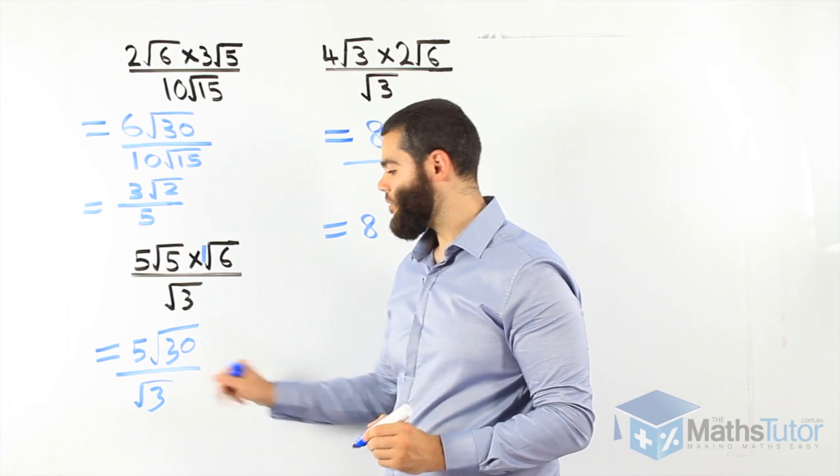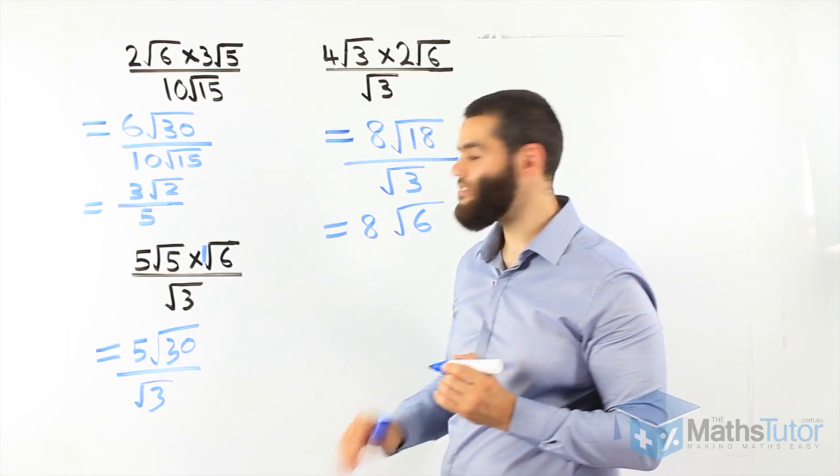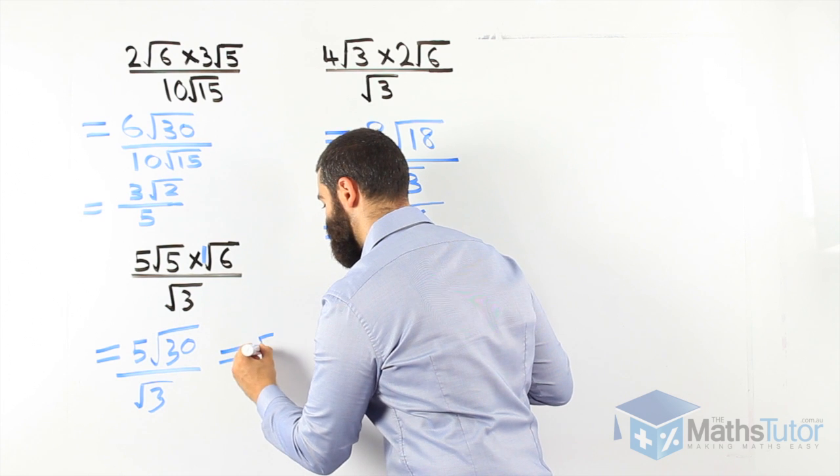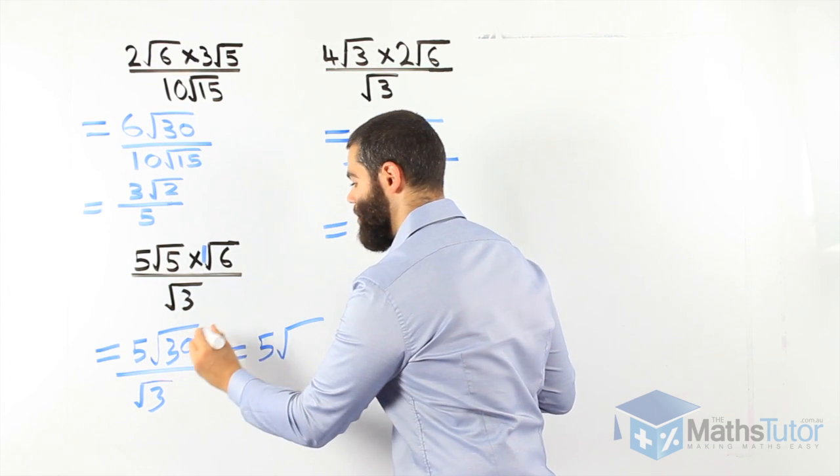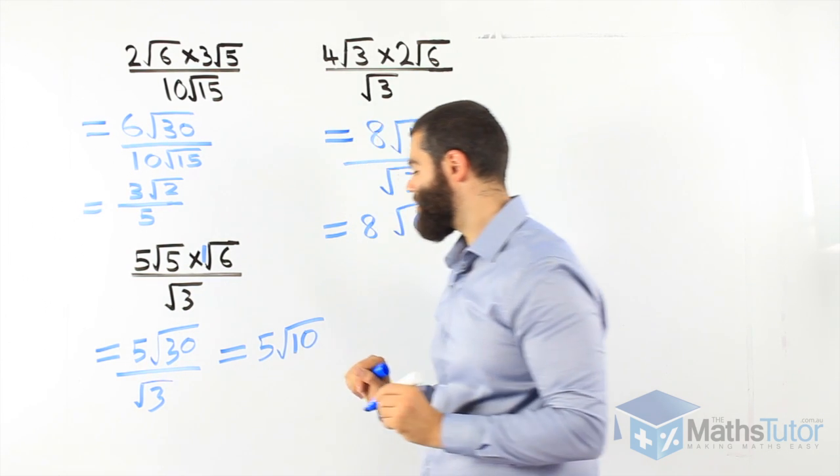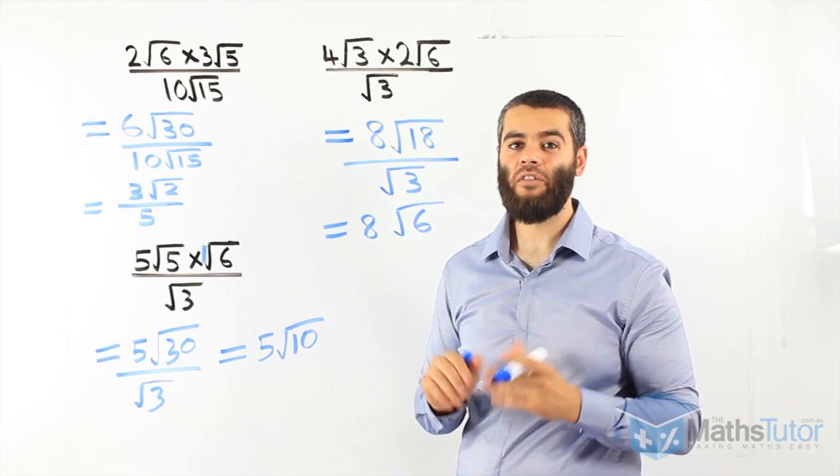5 root 30 divided by root 3. Can the surds divide? Yes. 30 divided by 3 can be done. So 5. We know 30 divided by 3 is 10. So our final answer is 5 root 10.